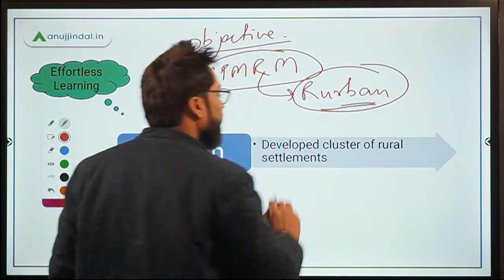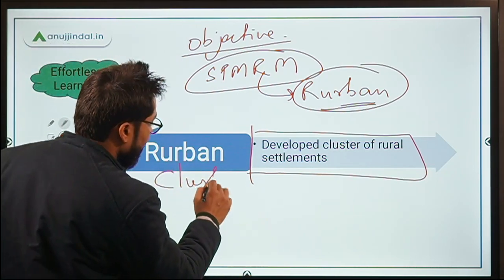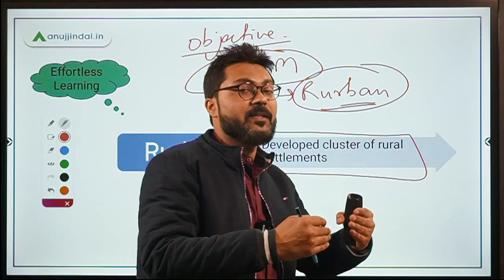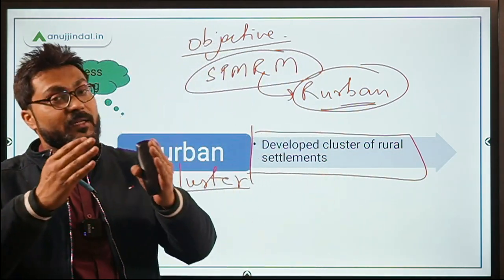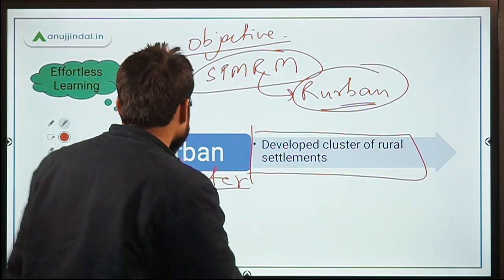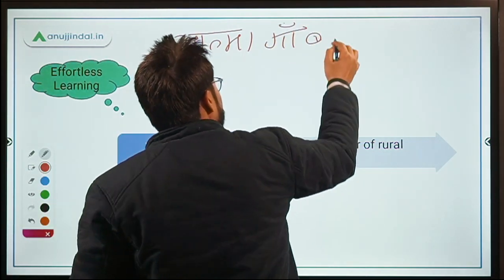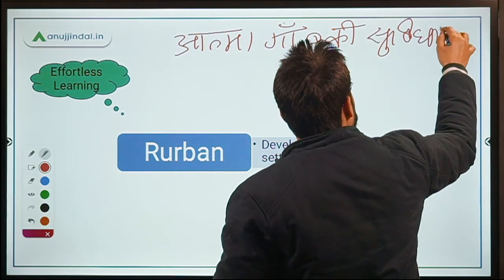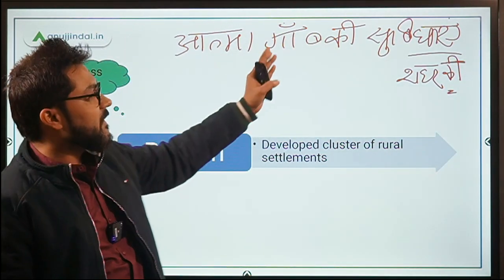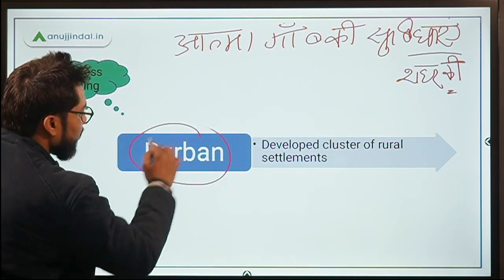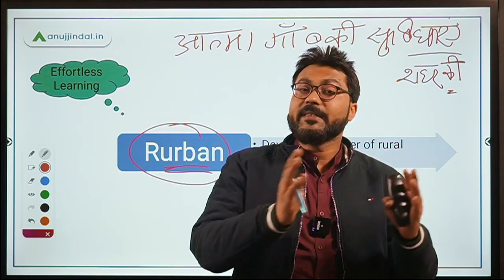What is the meaning of 'rurban'? Rurban means a developed cluster of rural settlements. A rurban cluster means a group of adjacent villages — a group of adjacent villages that have the soul of rural areas but developed facilities like urban areas. That is the motto: soul of rural areas and facilities of urban areas.